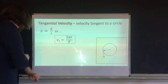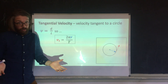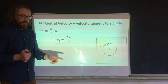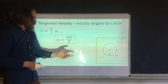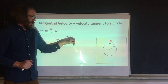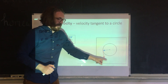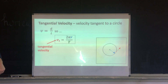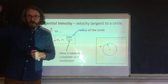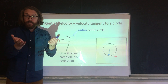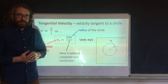To calculate tangential velocity, we use velocity equals distance divided by time. The distance around the circle is the circumference, which is two pi r. So the equation is: vt equals two pi r divided by T, where T is the time to complete one revolution. Units are meters per second because it's a velocity.